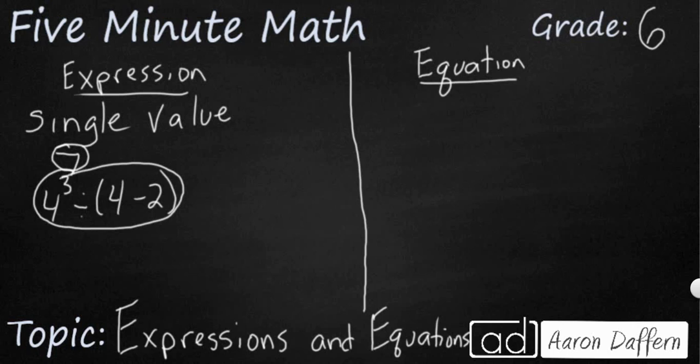An equation, on the other hand, is a complete mathematical thought. So you can think of your expression as an incomplete sentence or just a phrase, and an equation as a complete sentence with the mathematical equivalent of a subject and a predicate. The biggest key is that it has an equal sign. An equation shows you that two different values are equal.